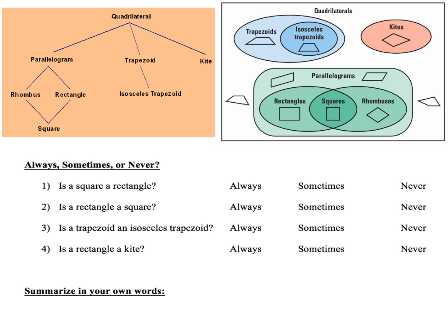Now when we take a look at always, sometimes, or never, what I want you to do is kind of take a look at where things are in the family tree. Or if you're more visual and like the Venn diagram, you can take a look at it that way. Is a square a rectangle? Well a square is going to start here and move upwards towards where the rectangle is. Or a square will start here in this peak part of the Venn diagram and move outwards to where the rectangle is. A square always has all the characteristics of the rectangle. So anytime you have a square, you know that figure could also be a rectangle.